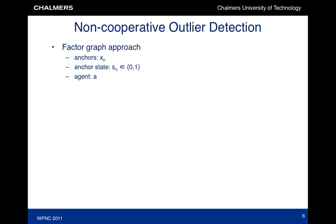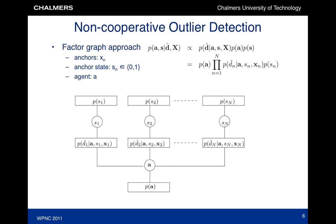Here we take a different approach using factor graphs. We consider the state of the anchors to be unobserved binary random variables, which indicate whether or not an anchor is malfunctioning. The joint distribution of all these variables — the agent position and the anchor states — can be factorized. Based on the factorization, we can draw a factor graph, where we have one variable vertex per variable, one factor vertex per factor, and edges when variables appear in factors. On this factor graph, we can now run the sum-product algorithm, or belief propagation.